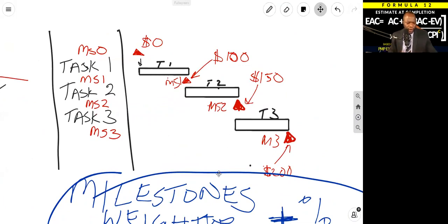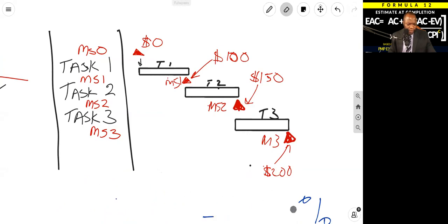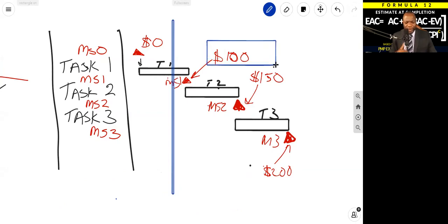So let's assume we are at time now. Let's say time now is here. If this is time now, you can see this milestone is weighed at $100, but the percent complete of the work right here is 60. 60 percent complete for task one, associated with milestone one.